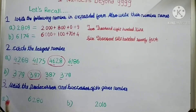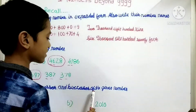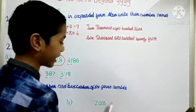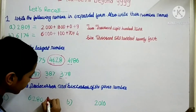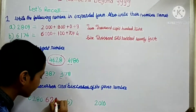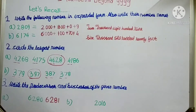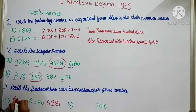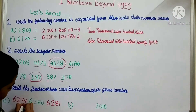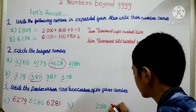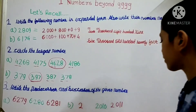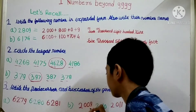Now let's start the third question: write the predecessor and successor of the given number. Successor means it is one step greater — we have to add one to get the successor. For 6280, the successor is 6281. Predecessor means it is one number before — we subtract one. So the predecessor of 6280 is 6279. For the next number, the successor will be 2011 and the predecessor will be 2009.